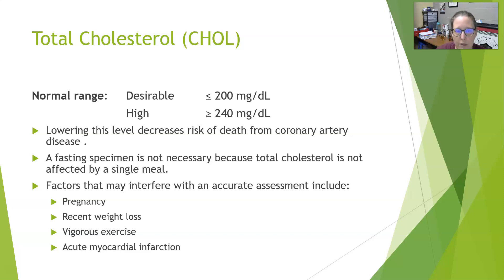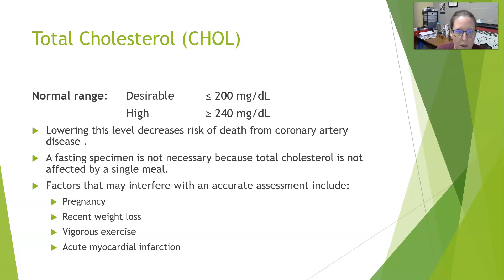The total cholesterol normal range: desirable is less than 200 milligrams per deciliter. Anything above 240 milligrams per deciliter is considered high cholesterol, with values between 200 and 240 considered borderline high risk. Lowering cholesterol decreases the risk of death from coronary artery disease. A fasting specimen is not necessary because total cholesterol is not affected by a single meal. Factors that can interfere with accurate assessment include pregnancy, recent weight loss, vigorous exercise, and acute myocardial infarction.